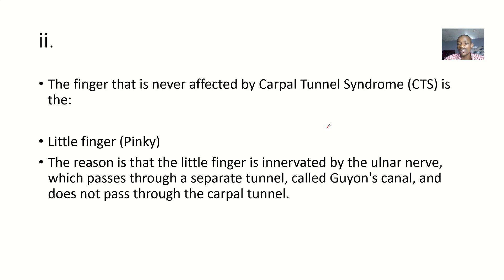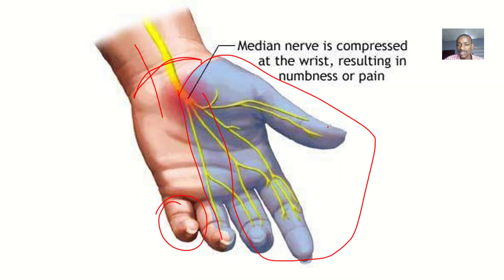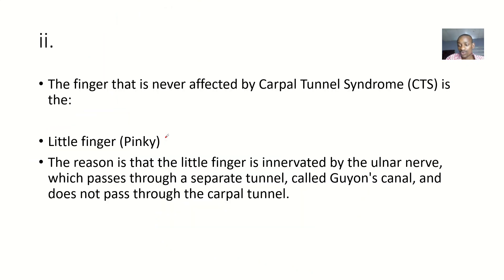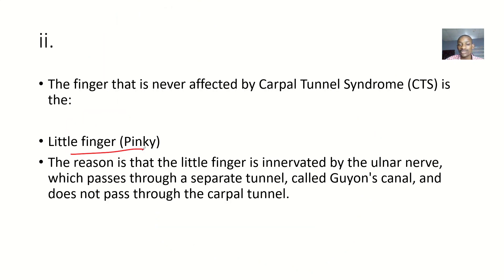Moving to the next question: which finger is not affected during carpal tunnel syndrome? In carpal tunnel syndrome, the nerve affected is the median nerve, and the area it supplies will suffer the most. The ulnar nerve supplies a different area, so that side will not suffer. The answer is only the pinky finger, because the ring finger is half affected — half of it is supplied by the median nerve.